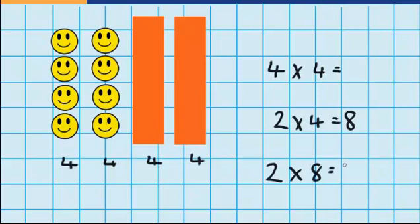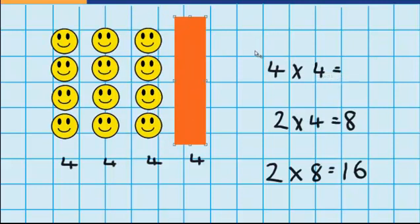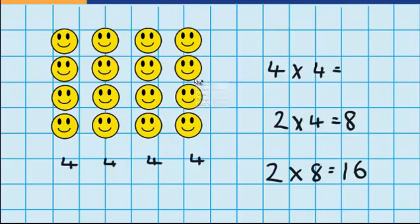And I know that 2 groups of 8 is 16. And if I remove these 2 last rectangles, you can see that we were right. There are 16 smiley faces there. Well, I hope you've found this lesson helpful. For more help, check out teachertools.co.nz